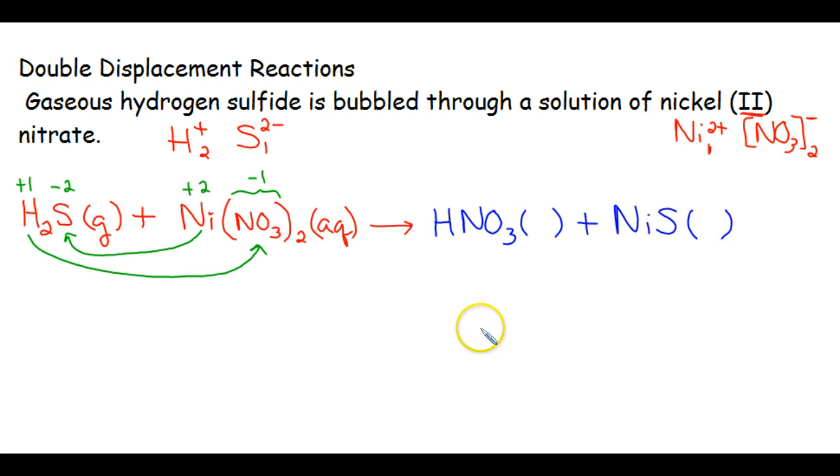Now, we need to check solubility rules to tell whether or not these are AQ or S. According to your solubility rules, all nitrate compounds are soluble. So this is AQ. Now something else, you might recognize that this is nitric acid. Remember, all acids will start with H in their formula. All of the acids you're going to see are going to be AQ.